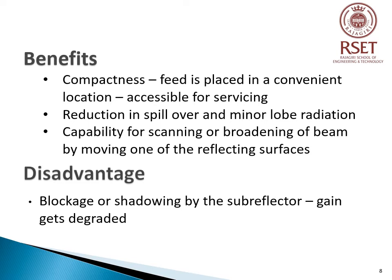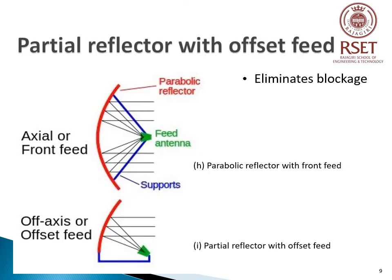The disadvantage of Cassegrain feed is that the presence of the subreflector introduces shadowing or blockage, which can significantly degrade the gain of the system. To avoid shadowing or blockage, we have two mechanisms: first, a partial reflector with offset feed, and second, a Cassegrain 2-reflector system.